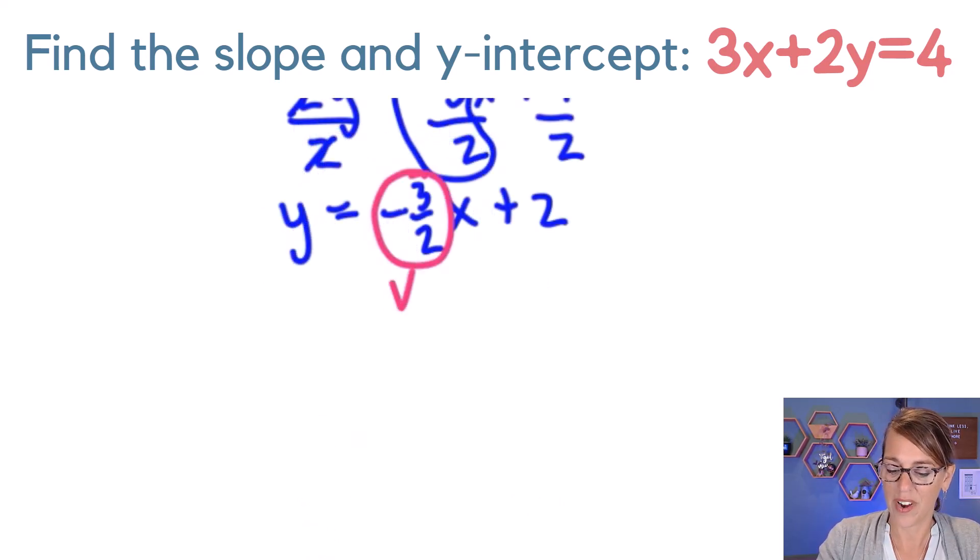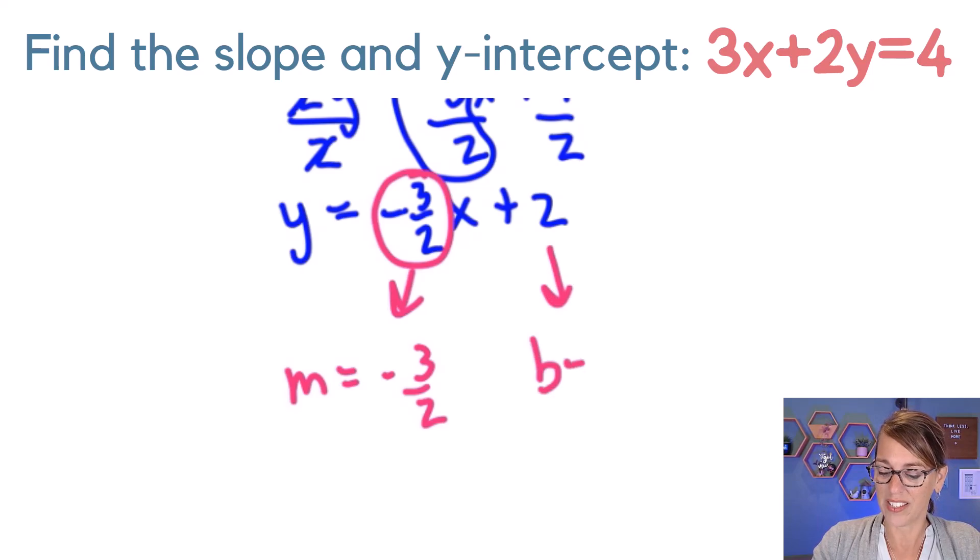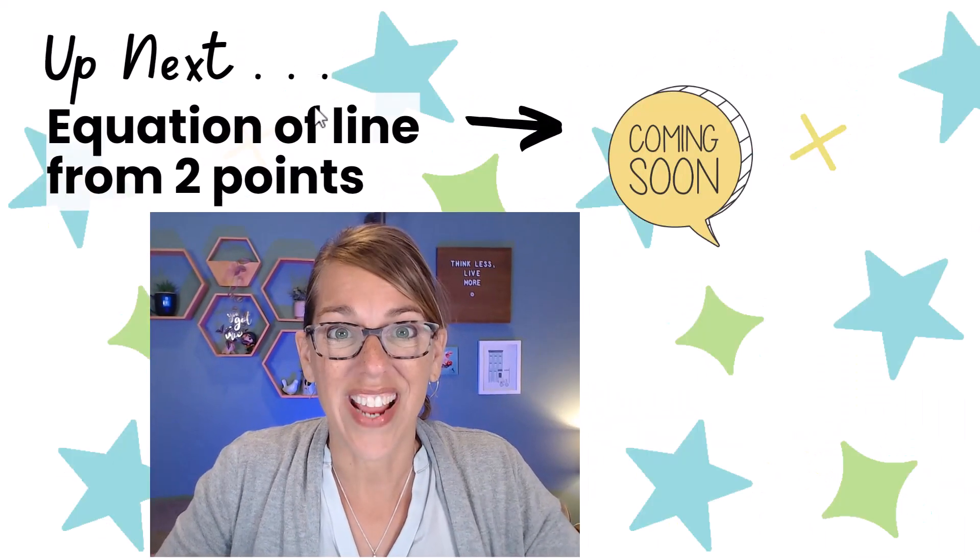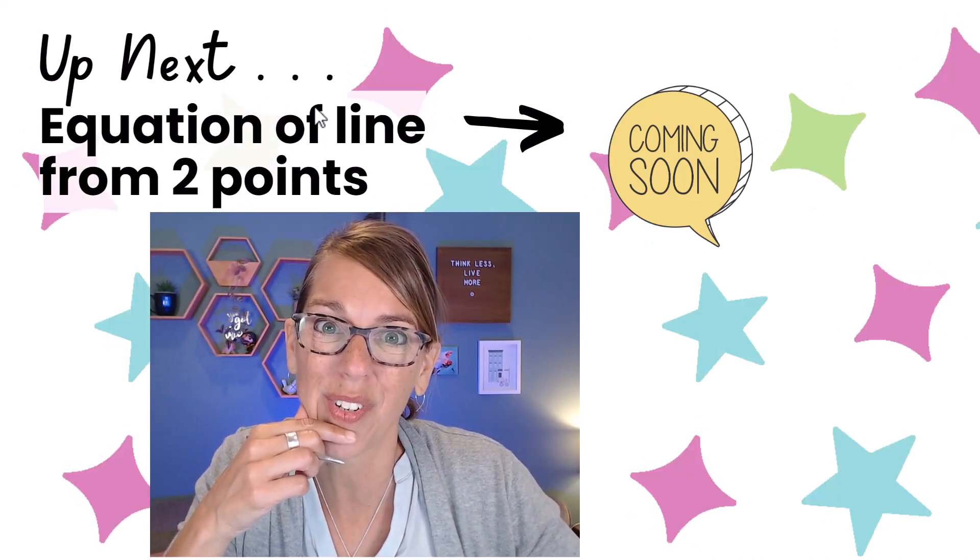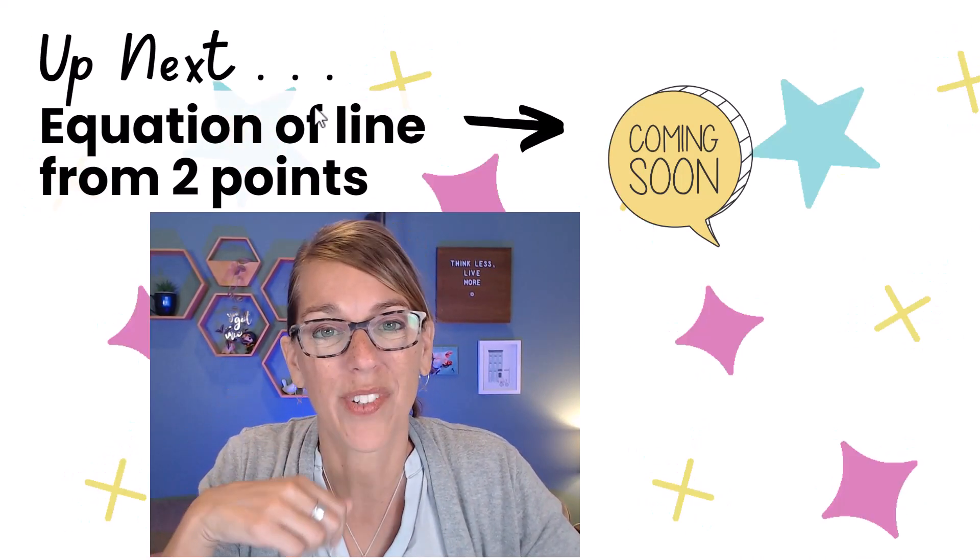My slope is the number out in front of x. So m equals negative 3 over 2. And my y-intercept b equals 2. You guys are doing great. Next we're going to look at equations of lines from 2 points. Thanks so much for watching.